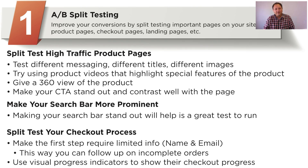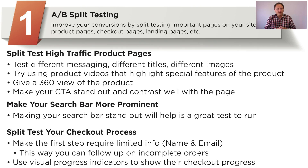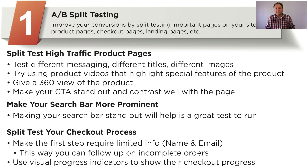Try using product videos that highlight special features of the product — this could help increase your conversions. Give a 360-degree view of the product; most people want to see how the product looks from the entire view. Make your call to action stand out and contrast well with the page. Run different experiments: change the button colors, change the button sizes, change how your call to action is worded. It's important to only experiment with one thing at a time, or you won't understand what's really working.